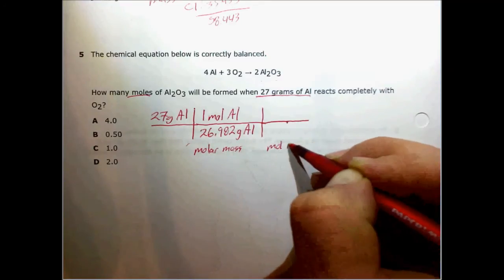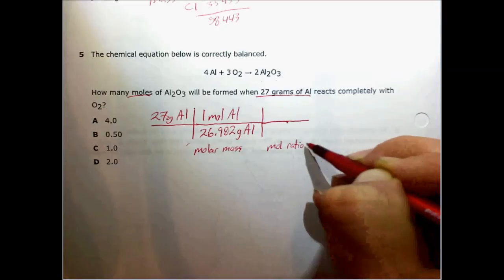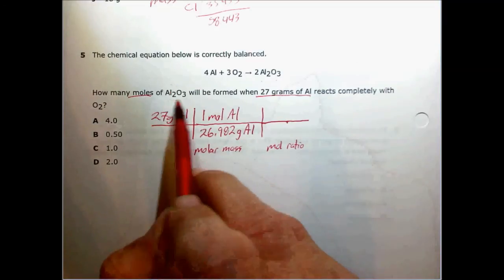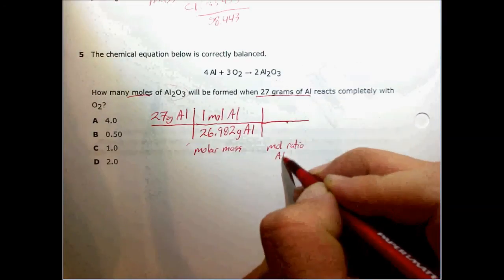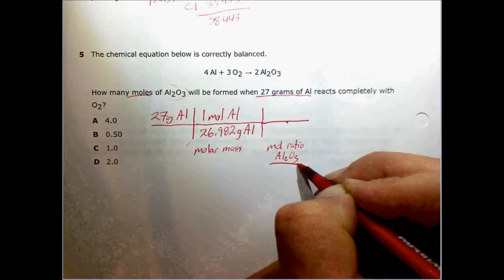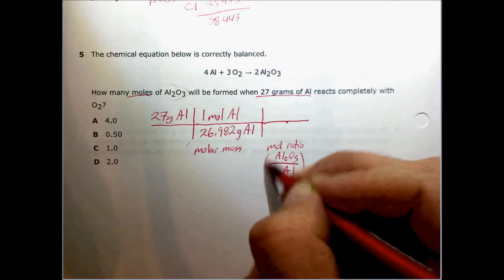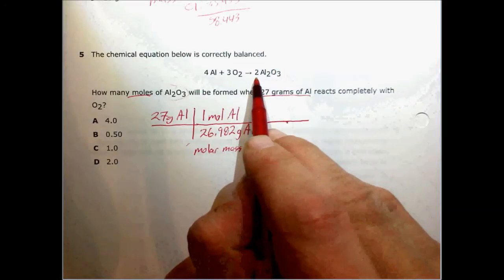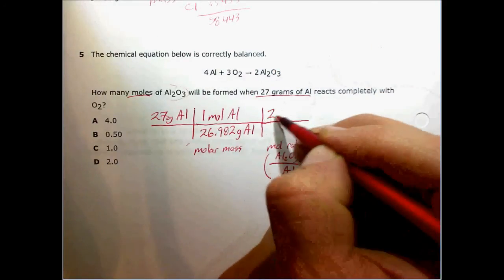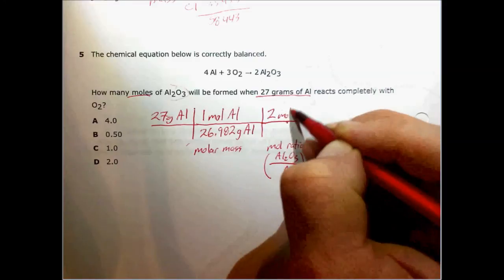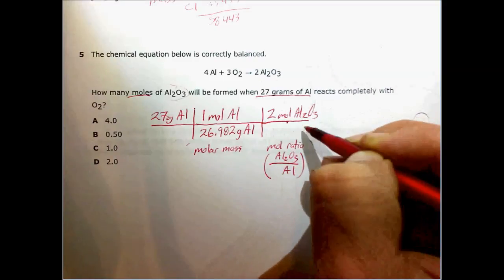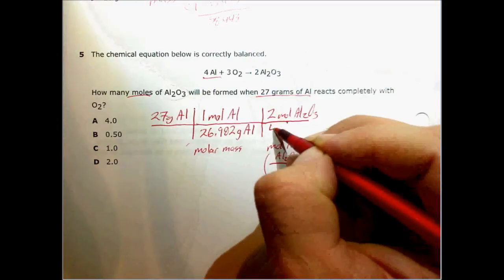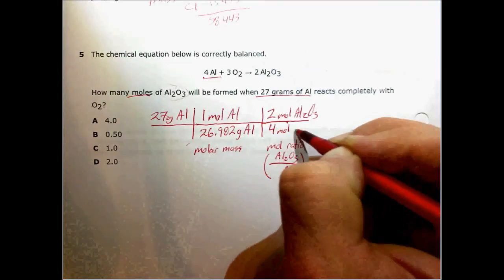So we started with a molar mass. Now we have a mole ratio. And that's the ratio of what we want, Al2O3, to what we're given, Al. When we look at our balanced chemical equation, we have two moles of Al2O3 for every four moles of aluminum.